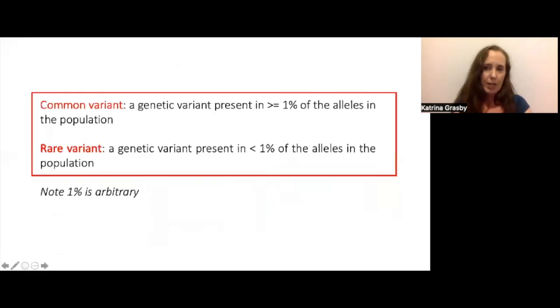When speaking of common genetic variation, we're often referring to genetic variants where the less frequent allele is present in at least 1% of the population, while a rare variant is going to be less frequently observed than that. However, that 1% is very arbitrary.